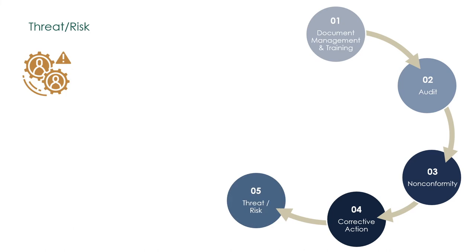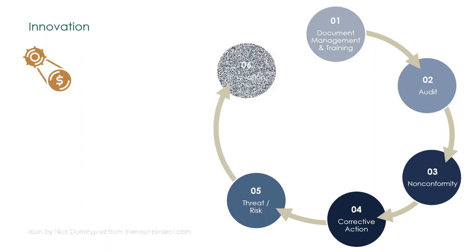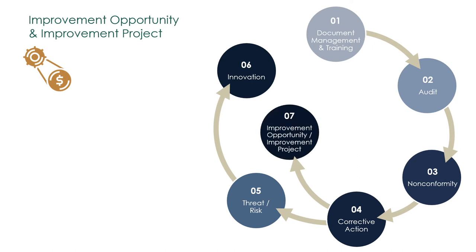Before the corrective action is completed, the relevant risks are adjusted so the risk register remains current, as seen in previous loops. The implementation of a countermeasure can be done as an innovation; if the countermeasure is a large improvement, it is implemented as an improvement project. Likewise, a minor finding or observation from the audit can result in an improvement opportunity, and risk is also reassessed during improvement projects.